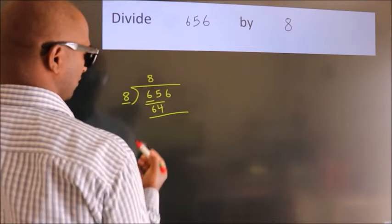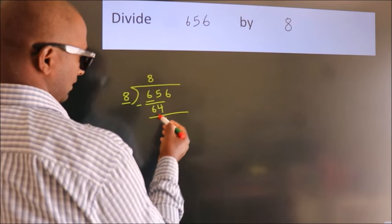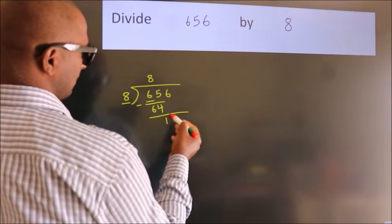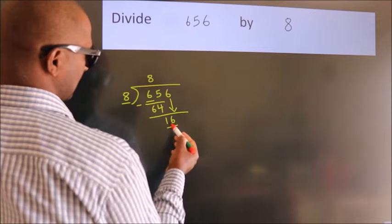Now, we should subtract. We get 1. After this, bring down the next number. So, 6 down, making 16.